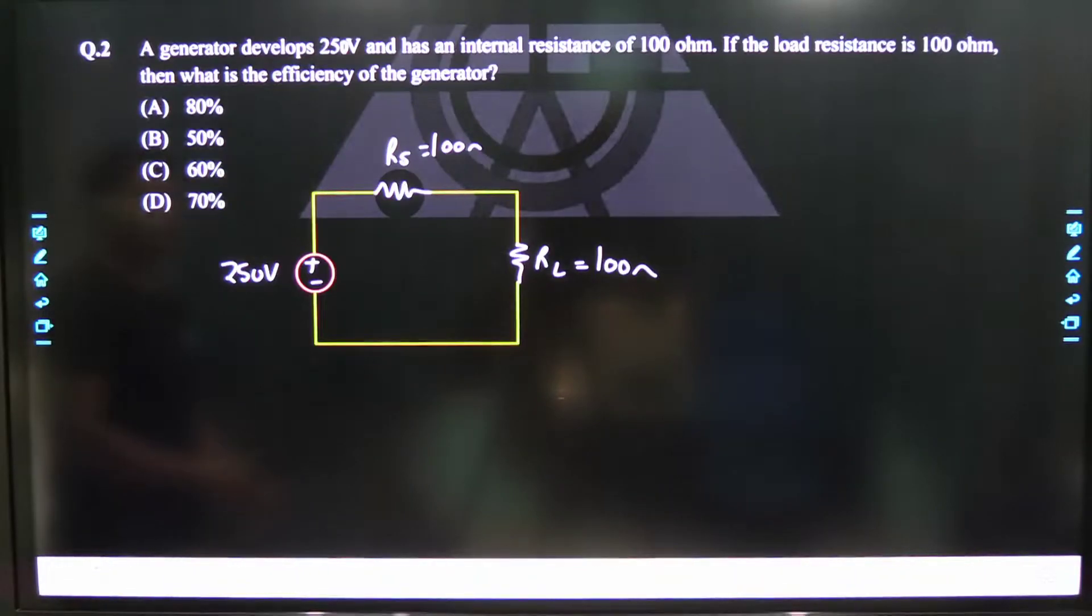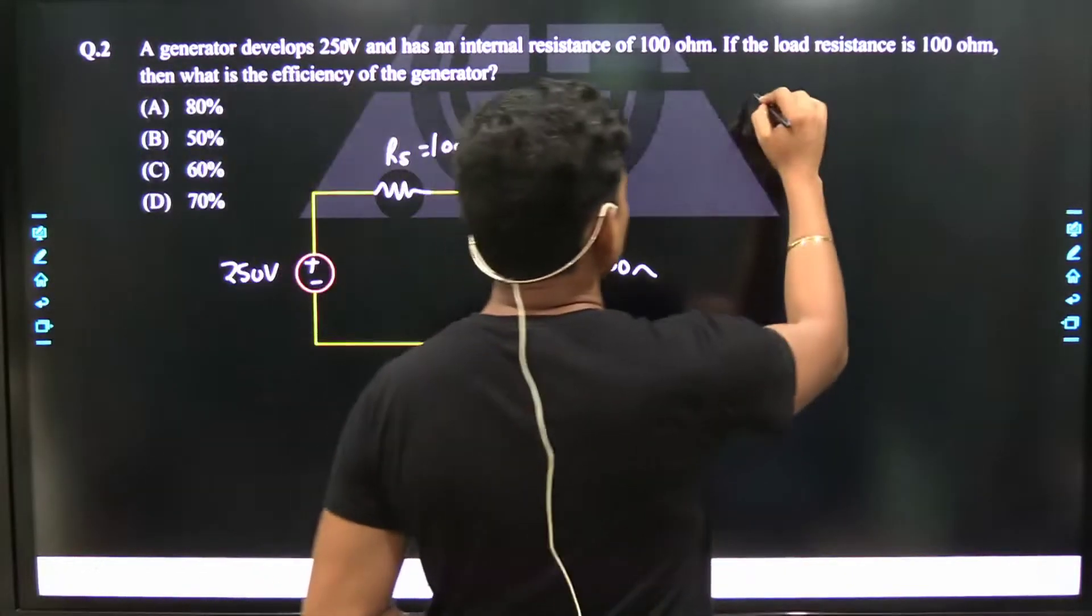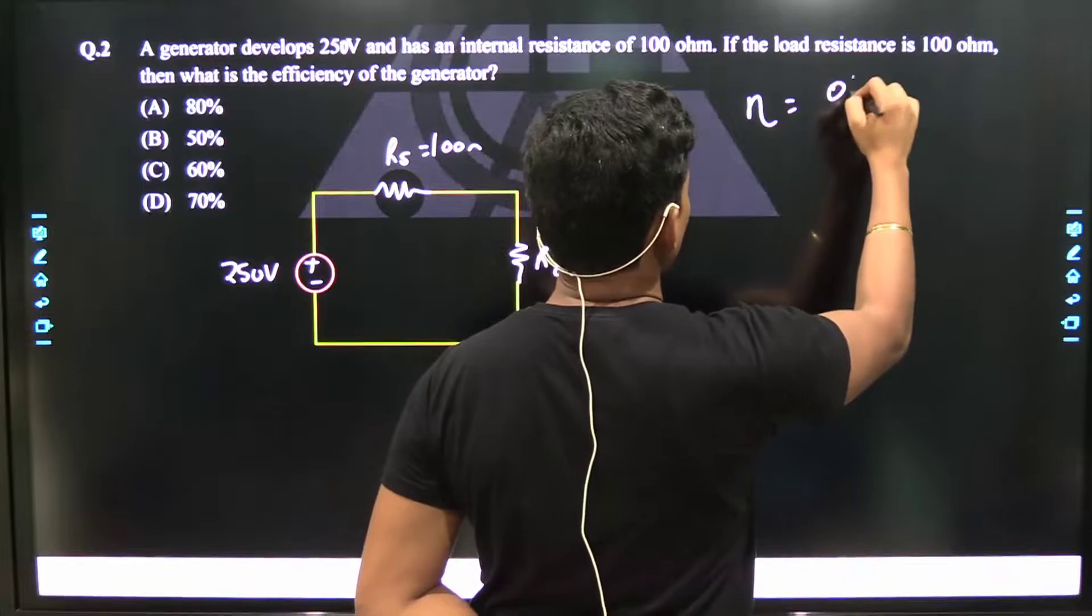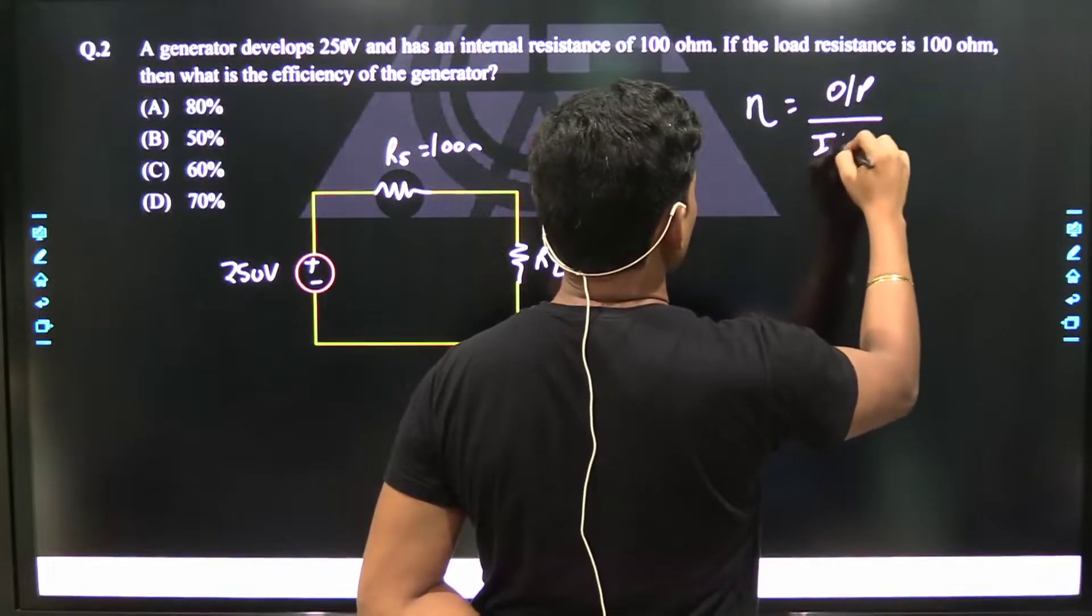The efficiency is going to be output upon input. If we talk about percentage, it's output upon input times 100.